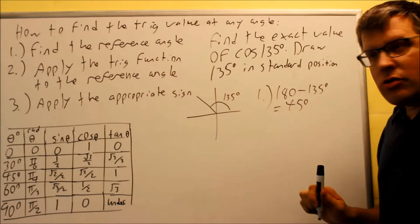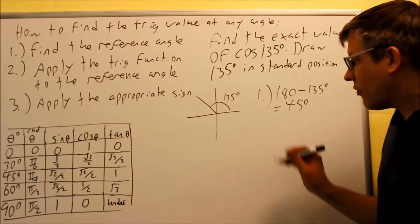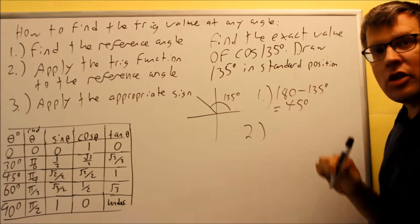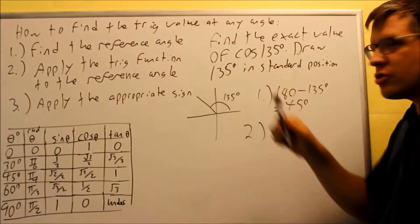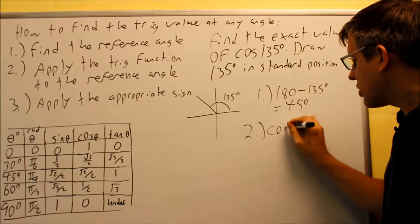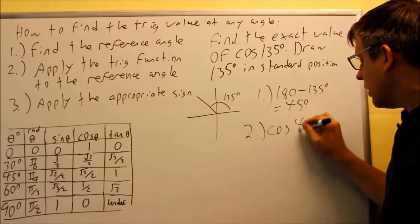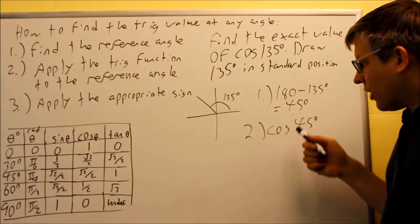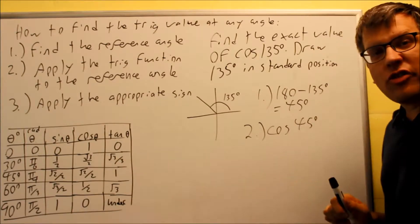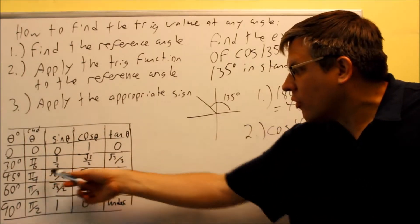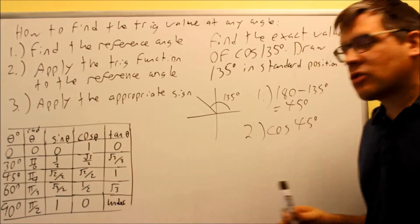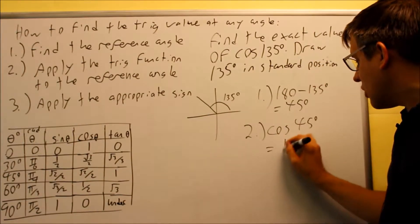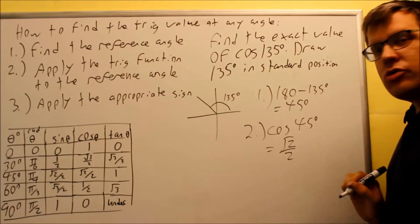Now step two: apply the trig function to the reference angle. The trig function for this problem is cosine — that was originally given to us. So I'm going to do cosine 45. Cosine 45 is a value I can grab off my table. Here's 45; I go over to cosine. That gives the value of square root of two over two.